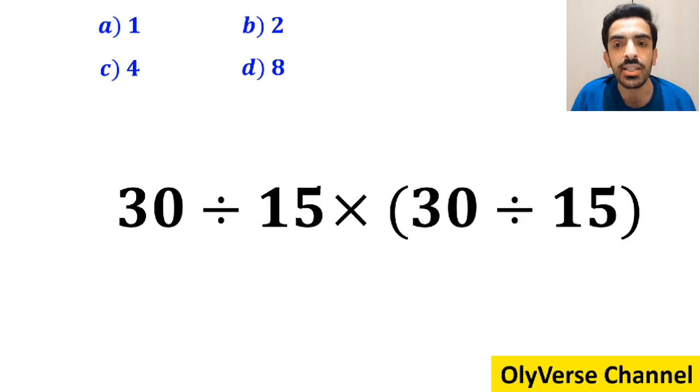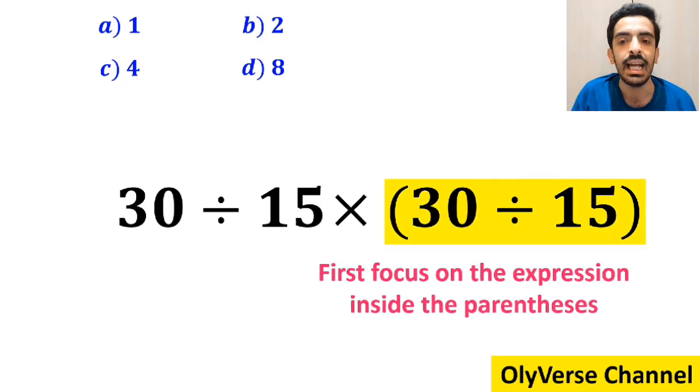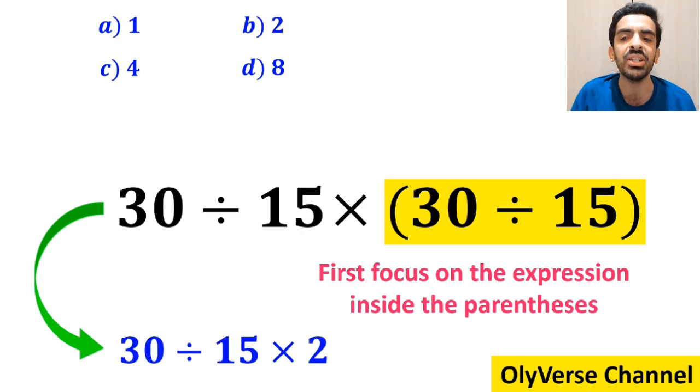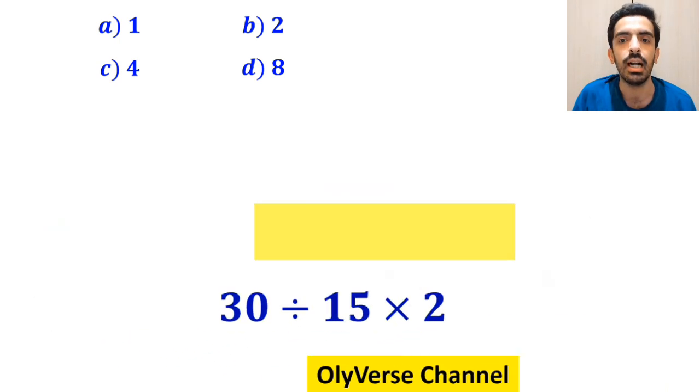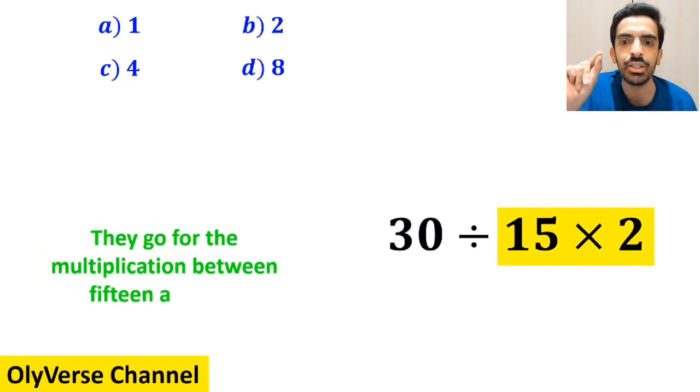Many people, when starting to solve this question, first focus on the expression inside the parenthesis, and instead of considering the whole expression, they rewrite it as 30 divided by 15 times 2. In the next step, they go for the multiplication between 15 and 2,